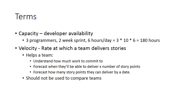Velocity is the rate at which the team delivers stories. For example, a team that delivers 35 story points per sprint on average may be said to have a velocity of 35 story points.